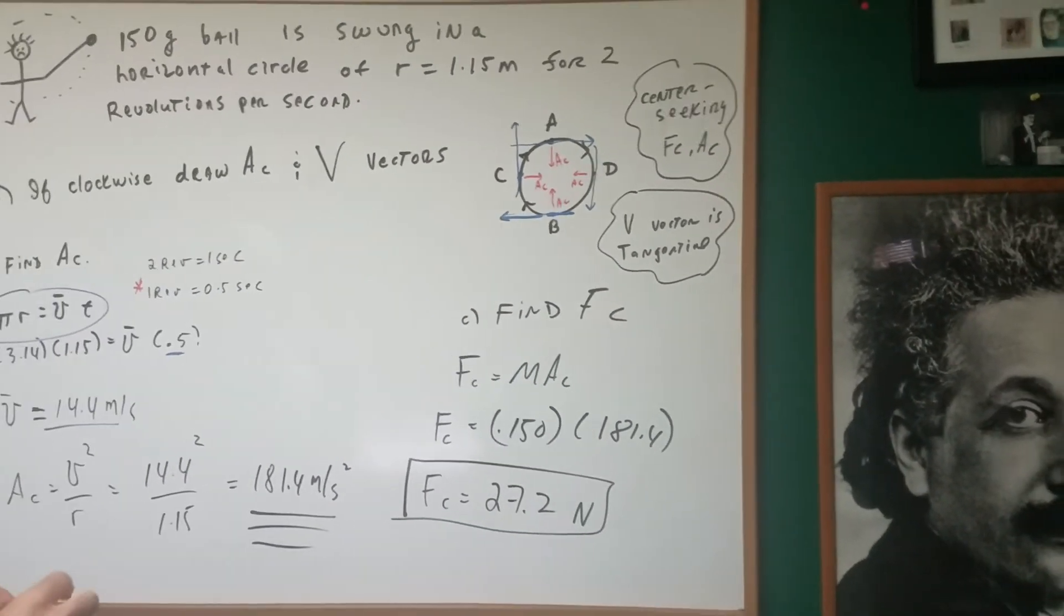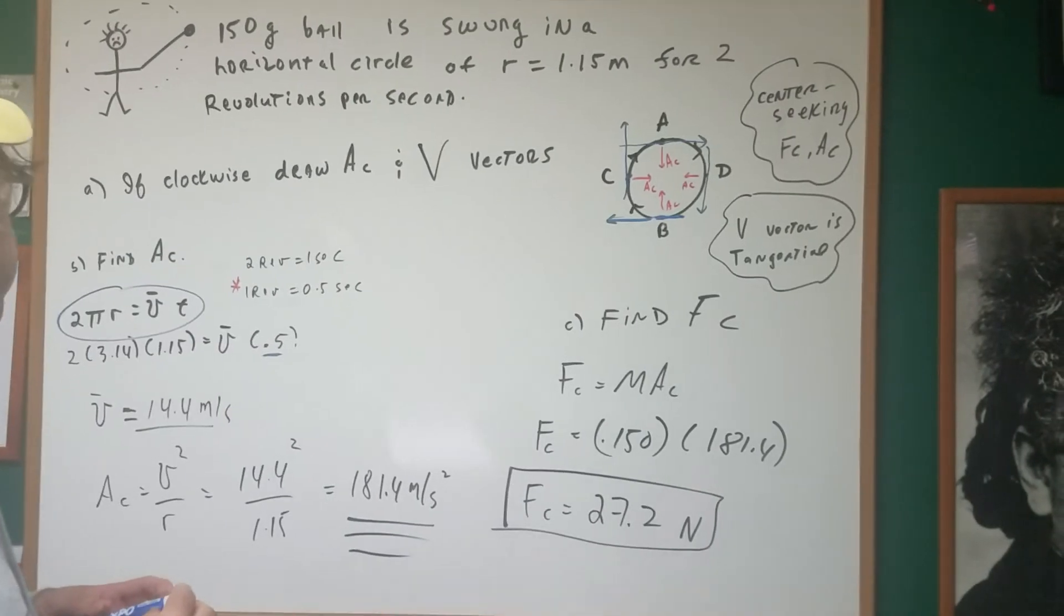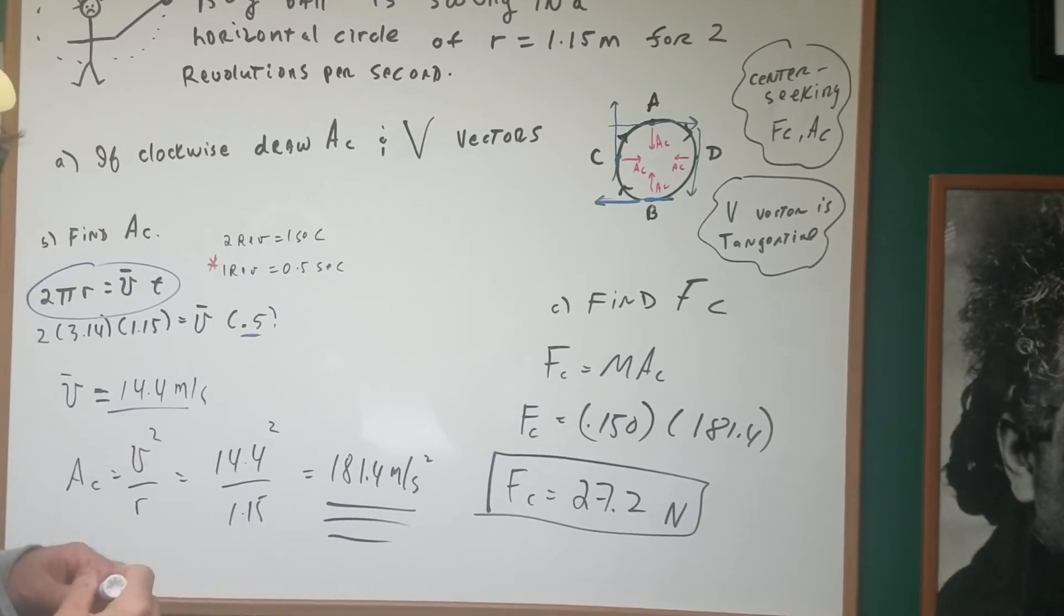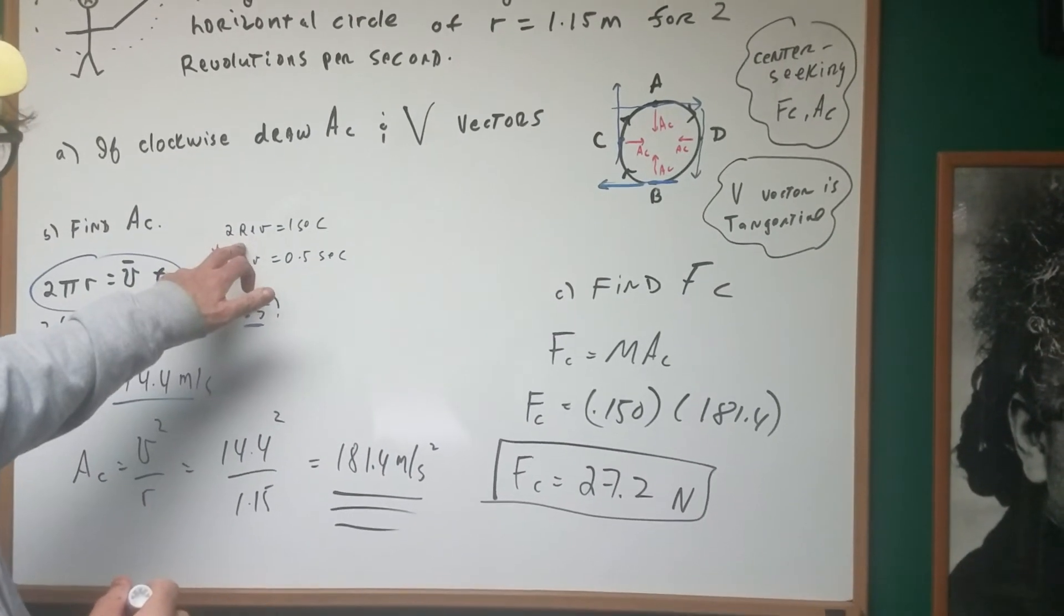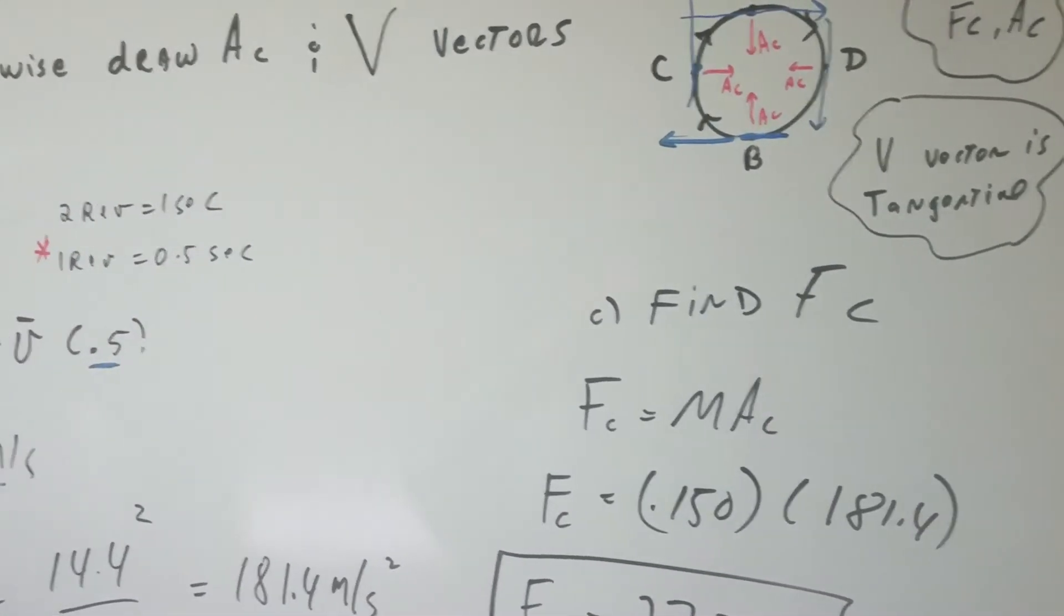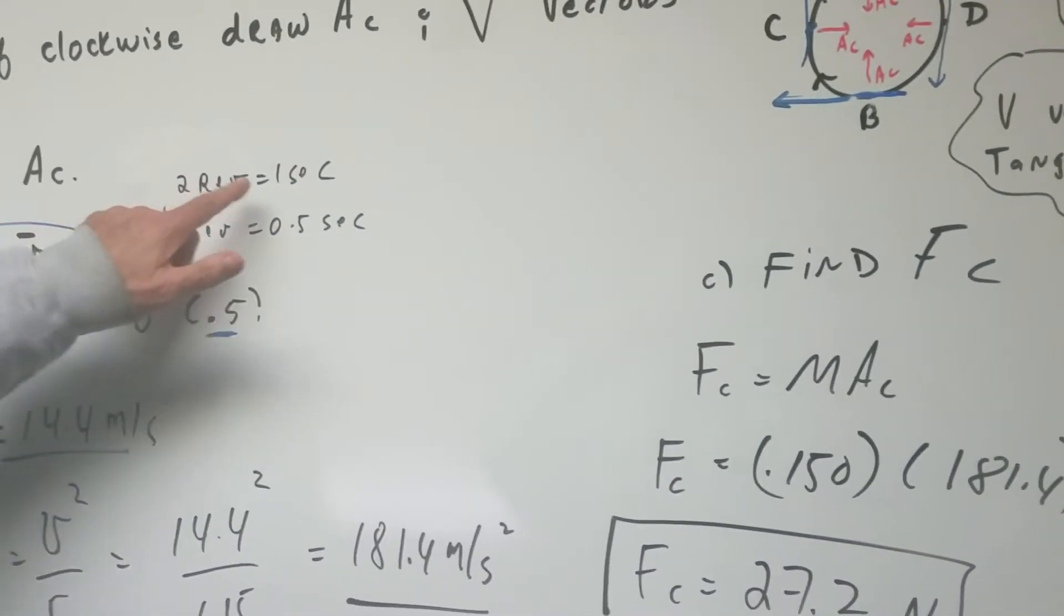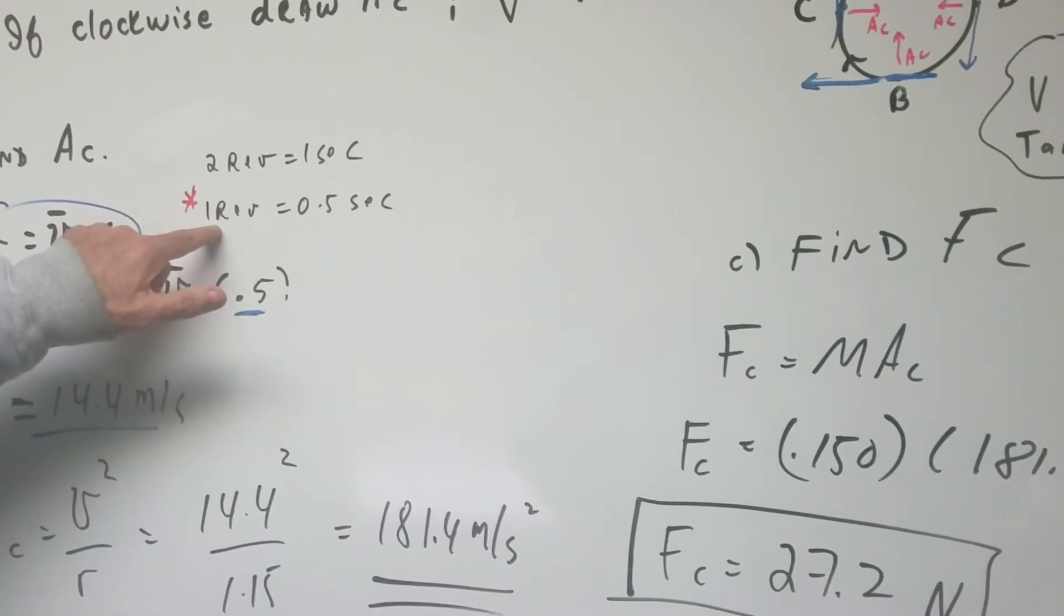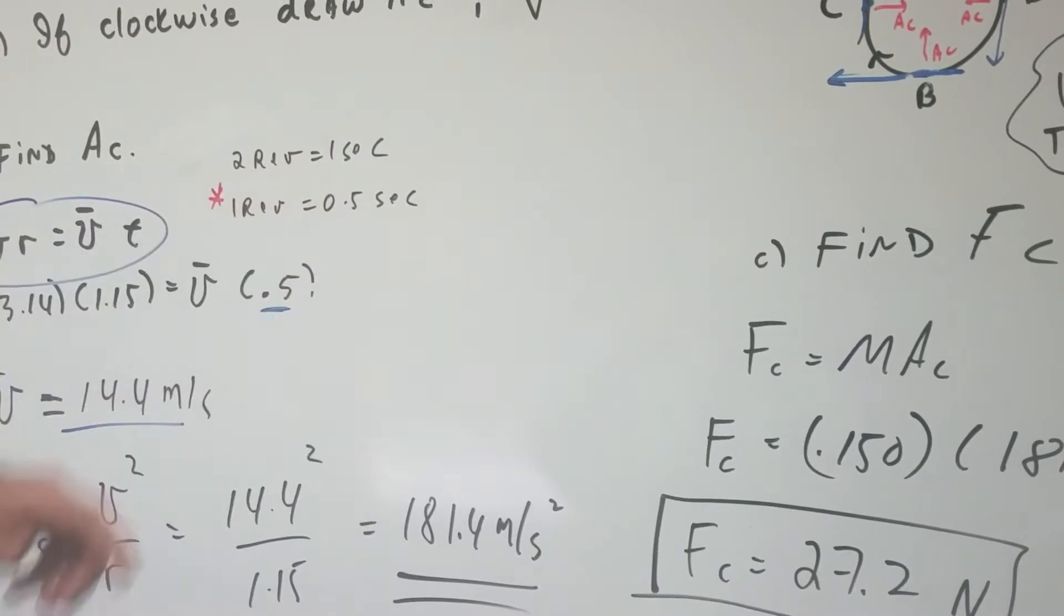Part B, what would be the acceleration or the centripetal acceleration? The trick to the question is if you're ever given revolutions, you got to find the time. Two revolutions is one second. If you divide it by two, you get it in terms of one revolution: one divided by two is 0.5 seconds.